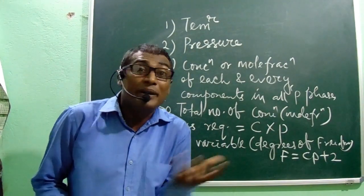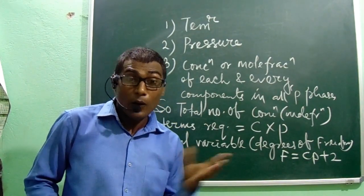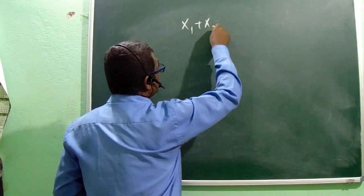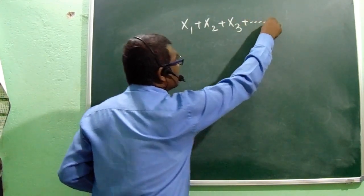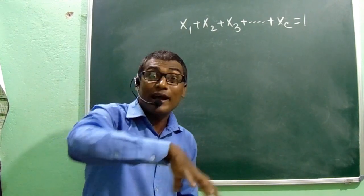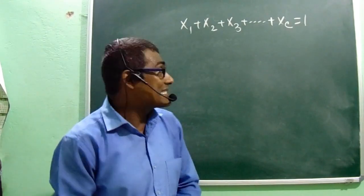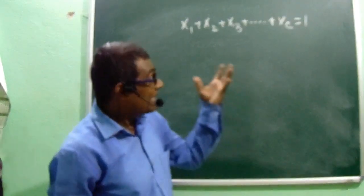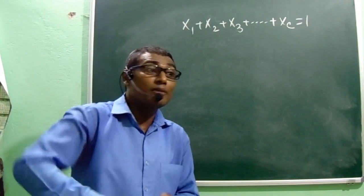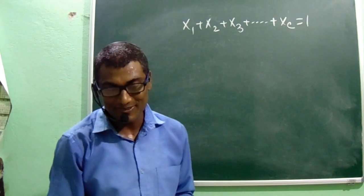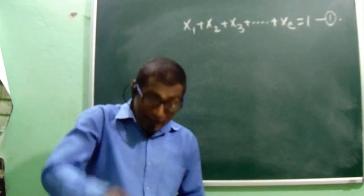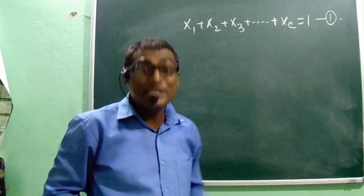There is a relationship between the mole fractions of all the components in a given phase: X1 + X2 + X3 + ... + Xc = 1. The total mole fractions of all components in a phase sum to 1, meaning we can calculate the mole fraction of any component if we know the mole fractions of all others. For each phase there is one such equation, and for all P phases there are P such equations.